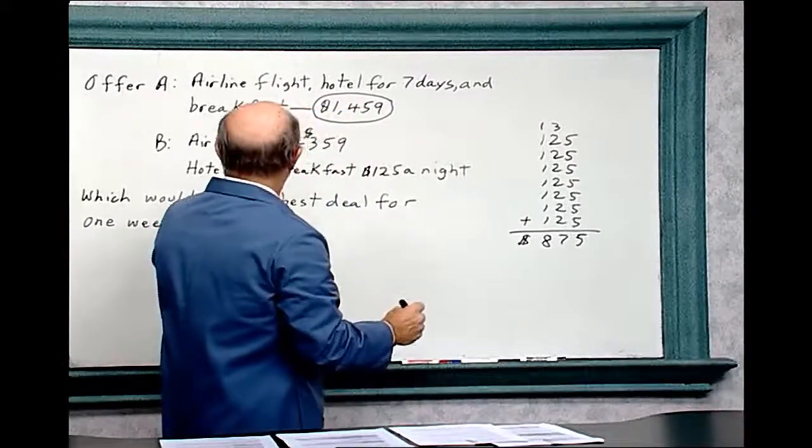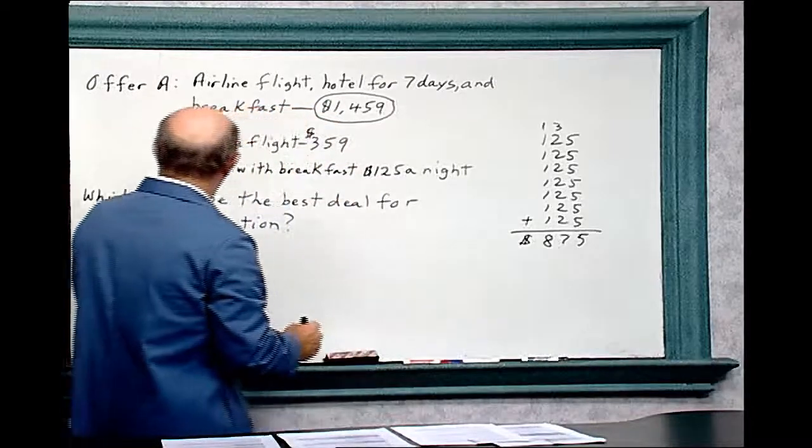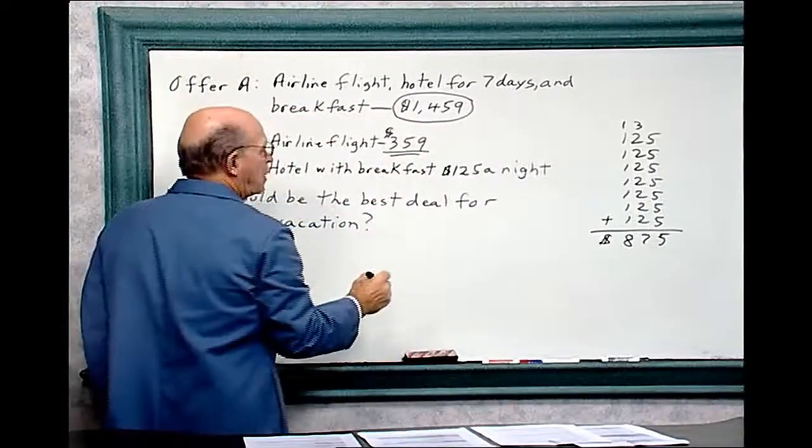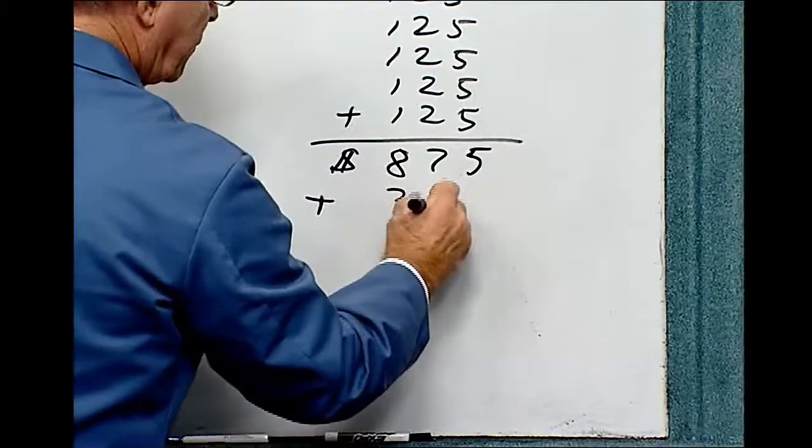So the hotel with breakfast would cost $875. Now the airline flight is $359, so you have to add 359 onto it. Plus 359.